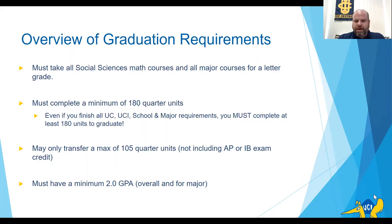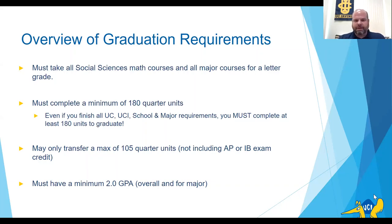There is a maximum transfer limit of 105 quarter units for transfer students — this does not include AP or IB exam credit. If you're coming from a semester school, 70 semester units equates to 105 quarter units. That gives you an idea of the maximum you can transfer in. That doesn't mean you can't take more courses at a community college, but you wouldn't get any extra units for them at that point.